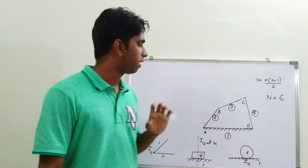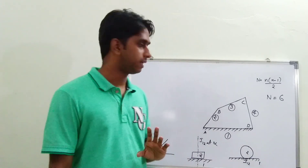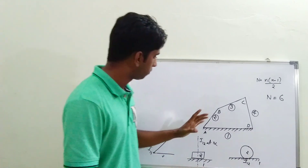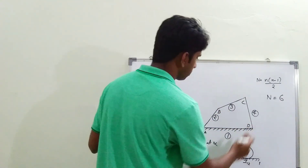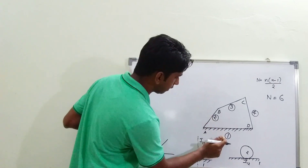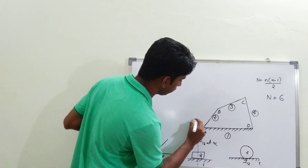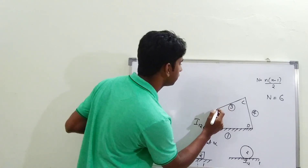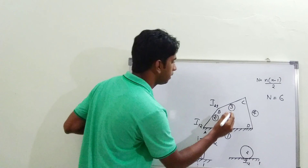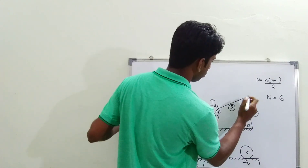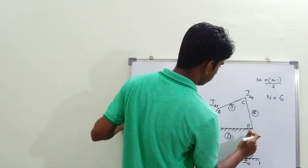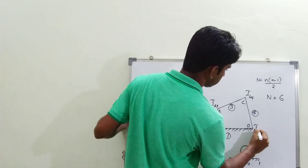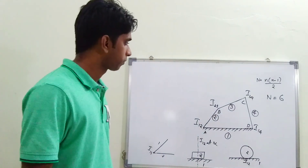The next step is to mark the primary instantaneous centers using the rules. By visual examination we have four pivoted joints, so we can identify: the instantaneous center between links one and two, written as I(1,2); between links two and three as I(2,3); between links three and four as I(3,4); and between links one and four as I(1,4). We have already marked all four primary instantaneous centers.